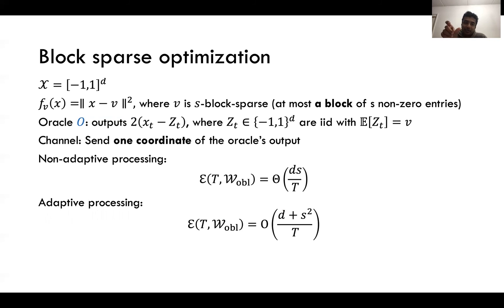When you have block sparse vectors v, then we show that if you can adaptively choose which coordinates to send then you can come up with a better rate. Without adaptive processing the rate is d times s over t, whereas if you allow for adaptive processing it becomes (d + s^2) over t. So for example if s is the square root of d then non-adaptive processing gives rise to d^(3/2) over t whereas adaptive processing gives us d over t.